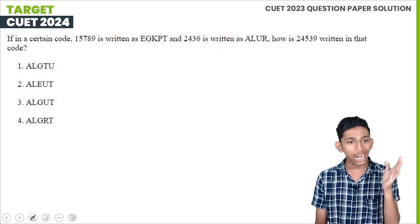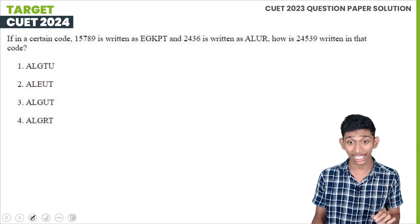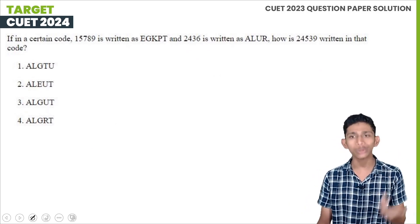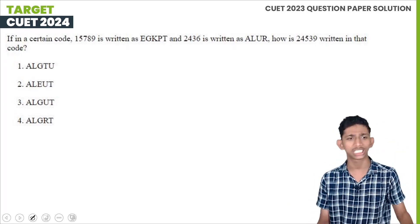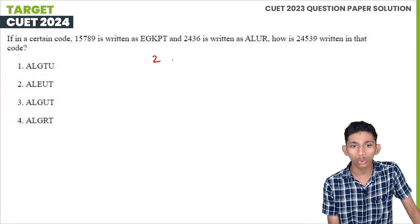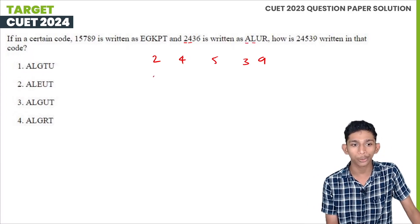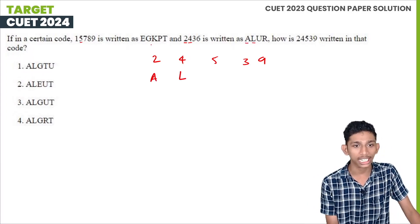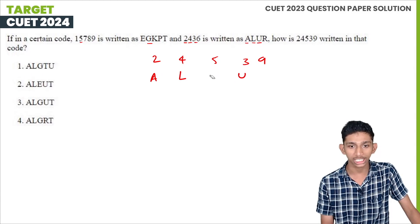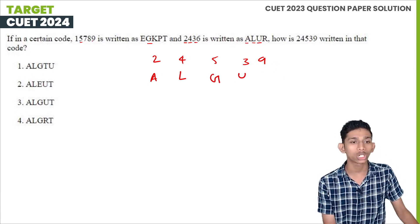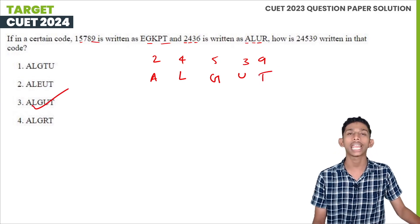If in a certain code, 15789 is written as EJKPP and 2436 is written as ALUR, how is 24539 written in that code? This is a coding and decoding question — we use direct coding. Mapping each digit: 2=A, 4=L, 5=G, 3=U, 9=T. So 24539 is written as ALGUT. Option 3 is ALGUT — that is the correct answer.